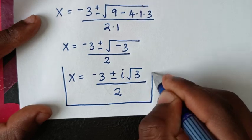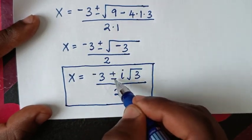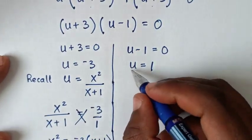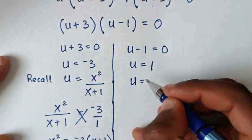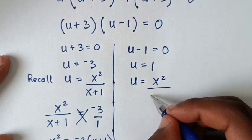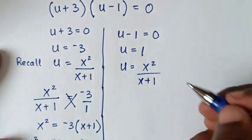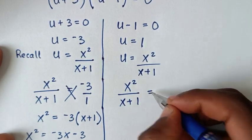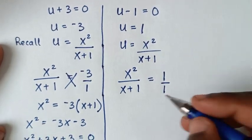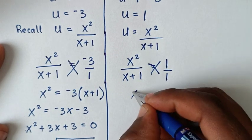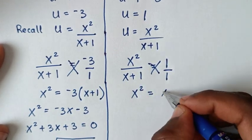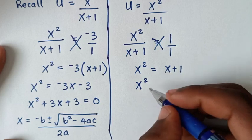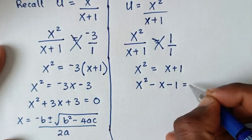We have two complex solutions from the first case. Now for the second solution u = 1: since u = x²/(x+1), we have x²/(x+1) = 1. Cross-multiplying gives x² = x + 1.